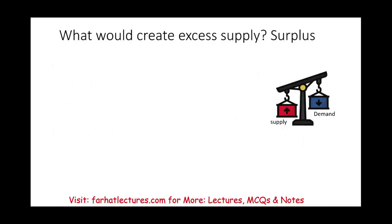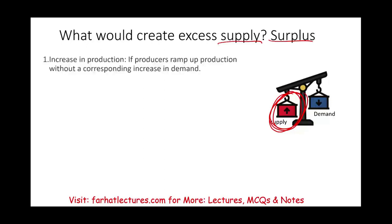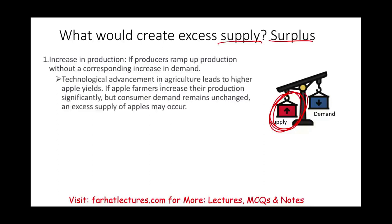So let's start by discussing what could create excess supply or surplus. When do we have a surplus? It's when we have more supply than what's demanded. One cause is an increase in production. If production of anything ramps up without a corresponding increase in demand — for example, technological advancement in agricultural products leads to higher apple yields — farmers increase their production significantly but demand stays the same. What's going to happen? You're going to have a surplus. And if this happens, what do you think will happen to the price of apples? The price will drop because producers want to sell that excess.